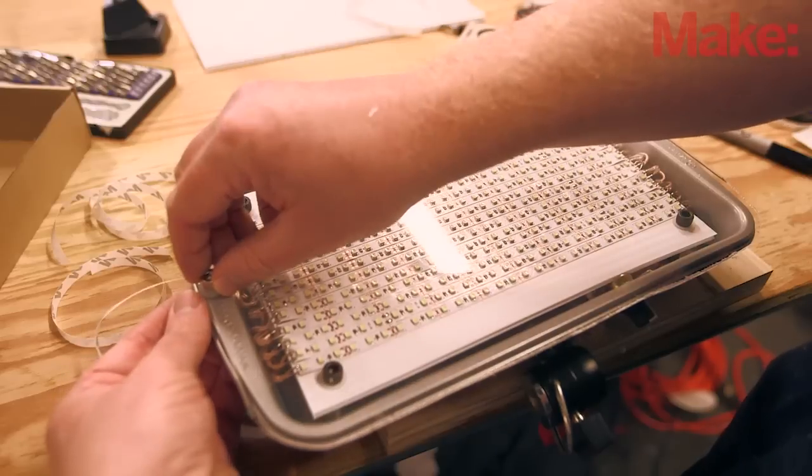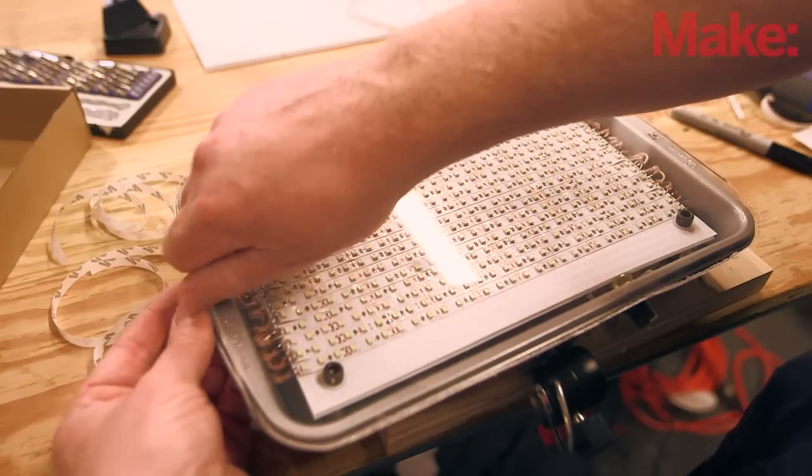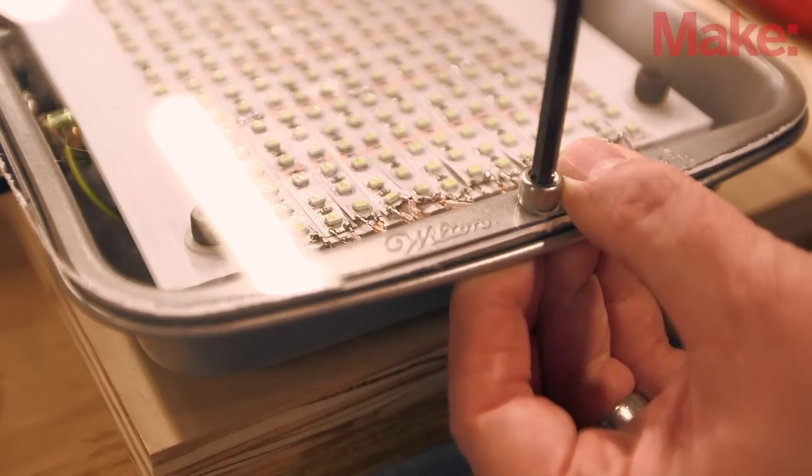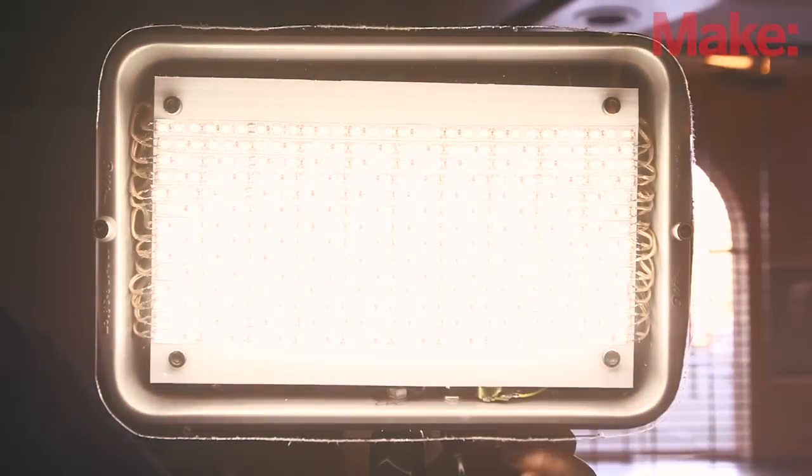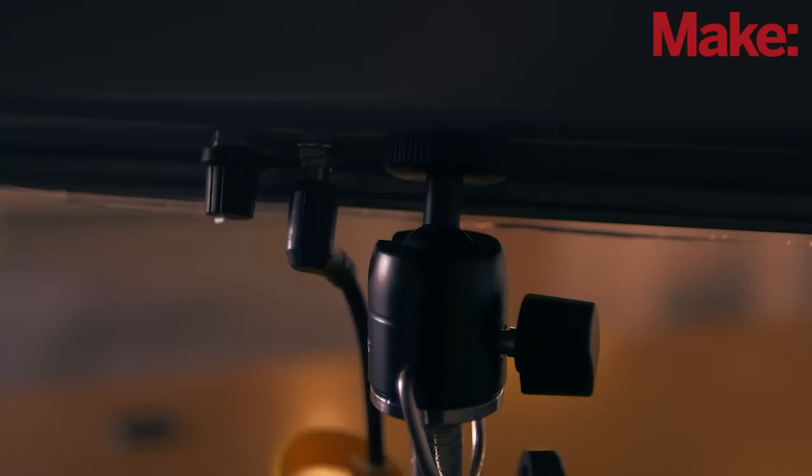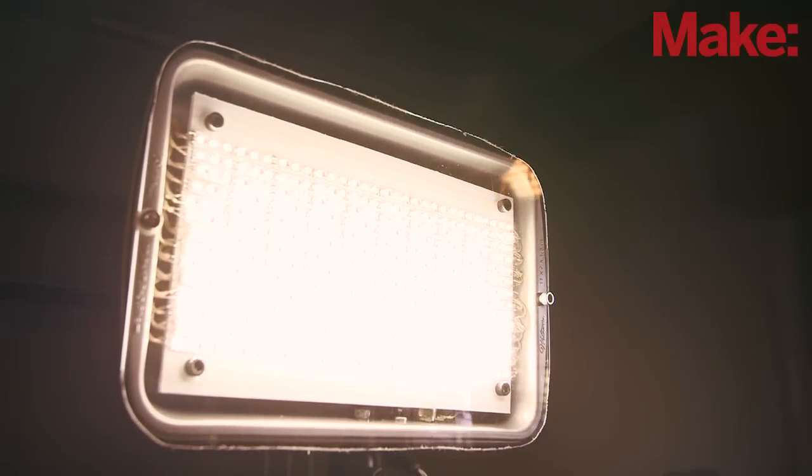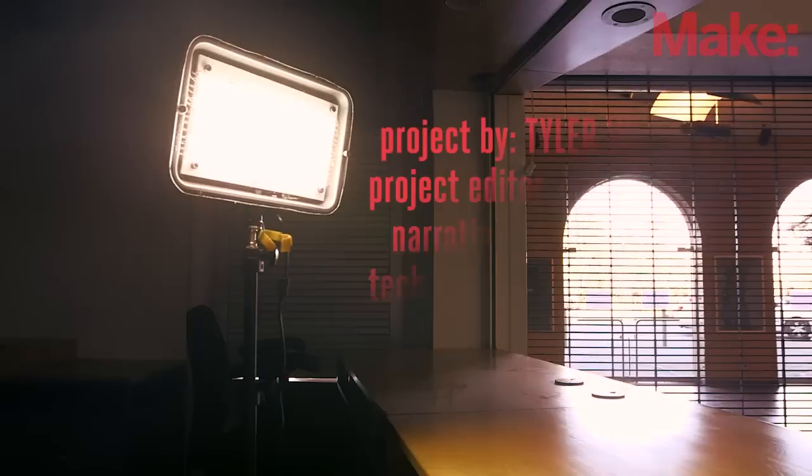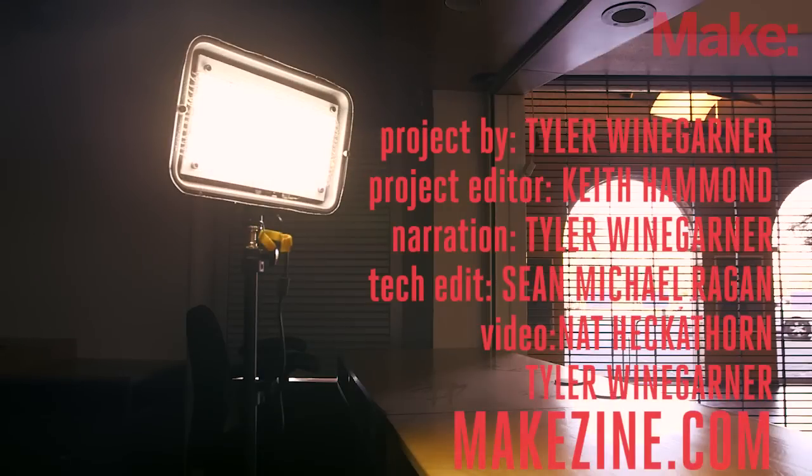Then, remove the tape and mount the plexiglass cover to the front of the housing using the remaining Allen screws, washers, and nuts. Your LED panel is now ready to use. You can use the ball head to attach it to any quarter inch tripod stud, and the shape of the baking tin makes it easy to attach diffusion or gels using binder clips. Have a great shoot, hit the subscribe button for more Make projects, and thanks for watching.